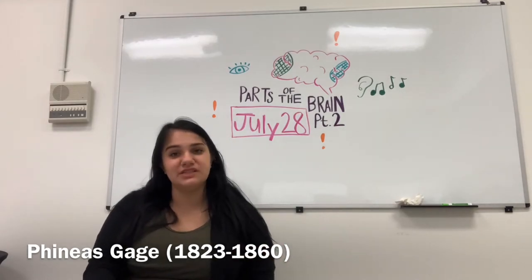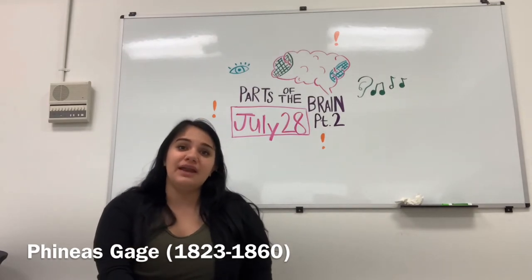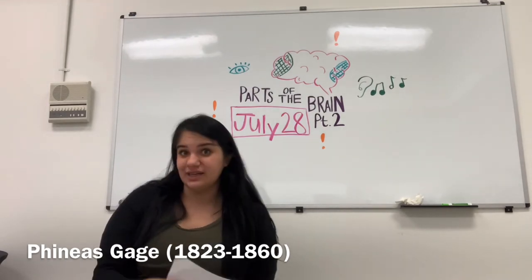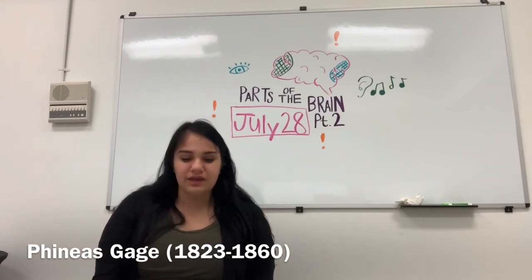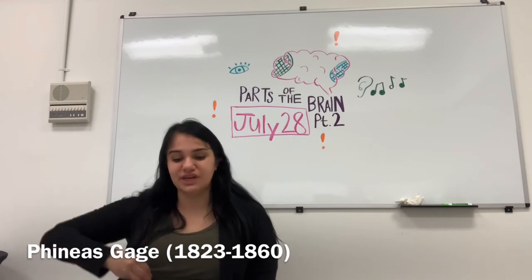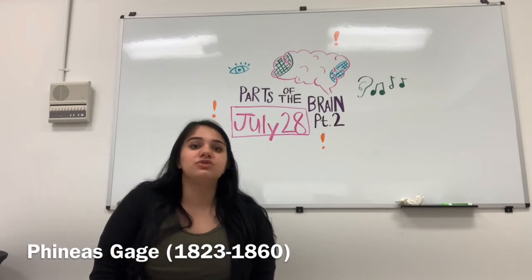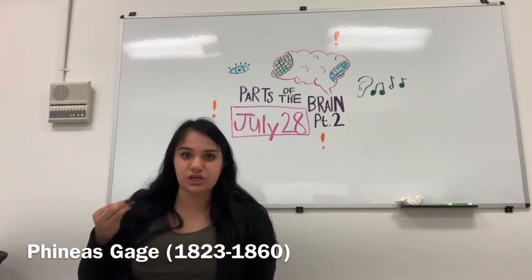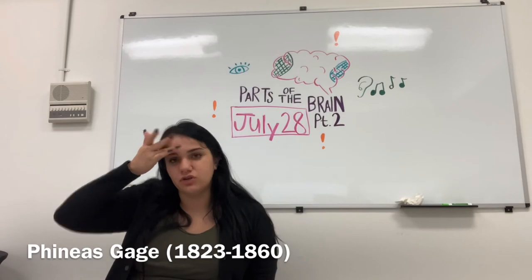Although Phineas Gage was in a terrible accident, it ended up being significant for science in understanding the function of the frontal lobe. Gage was also having trouble managing his emotions and would lash out a lot, which helped us conclude that emotional regulation is also found and controlled in the frontal lobe.